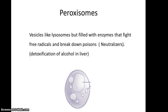Peroxisomes are modified vesicle structures, much like lysosomes, but they are filled with enzymes that fight free radicals and also break down poisons. Think of peroxisomes as the neutralizers, or hazmat team, of the cell. Peroxisomes are also the key structure in the detoxification of alcohol in the liver.